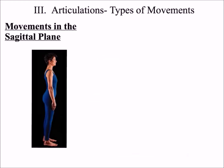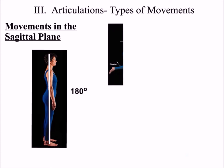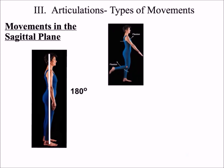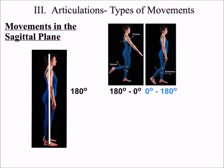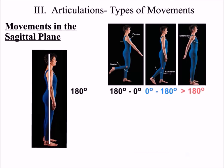The first set of movements we'll discuss are movements parallel to the sagittal plane. We describe these movements by looking at the joint angle. The straight white line that you see represents 180 degrees. Movements from 180 degrees to 0 is called flexion. Movements from 0 degrees to 180 is called extension. Movements greater than 180 degrees is called hyperextension.